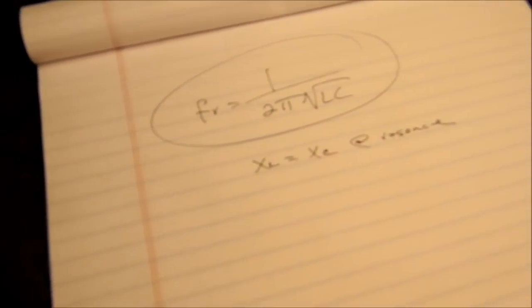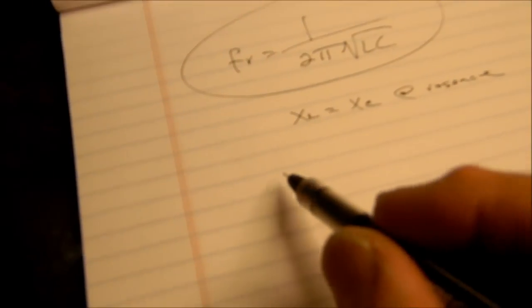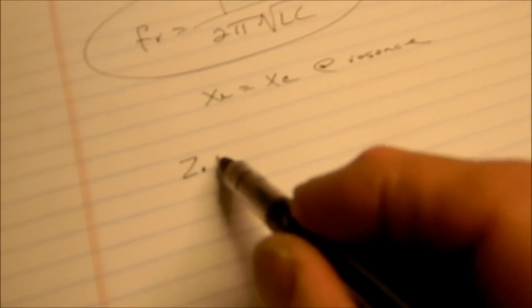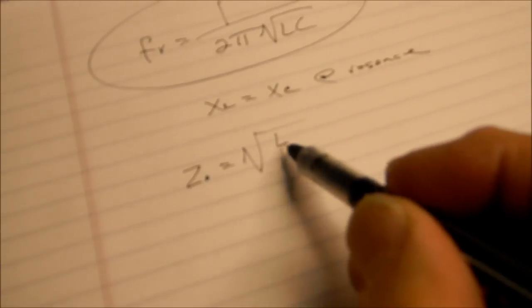We don't need to go there. And then the second one we're going to use is Z0, which is the characteristic impedance of the transmission line, equals the square root of L over C.